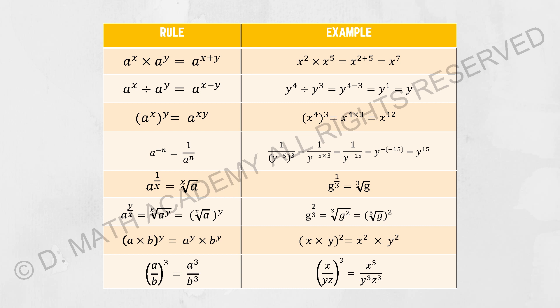The example at the bottom is also interesting. Looking at g to the power of 2 over 3, I can write it as g squared cube root, or cube root of g to the power of 2. For the next one, the y is multiplied into both variables.